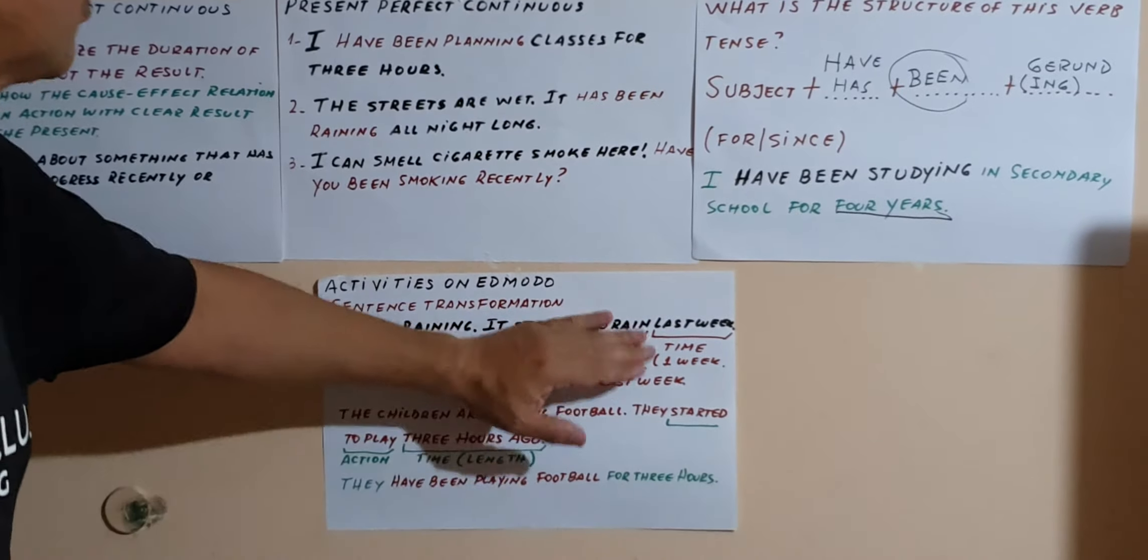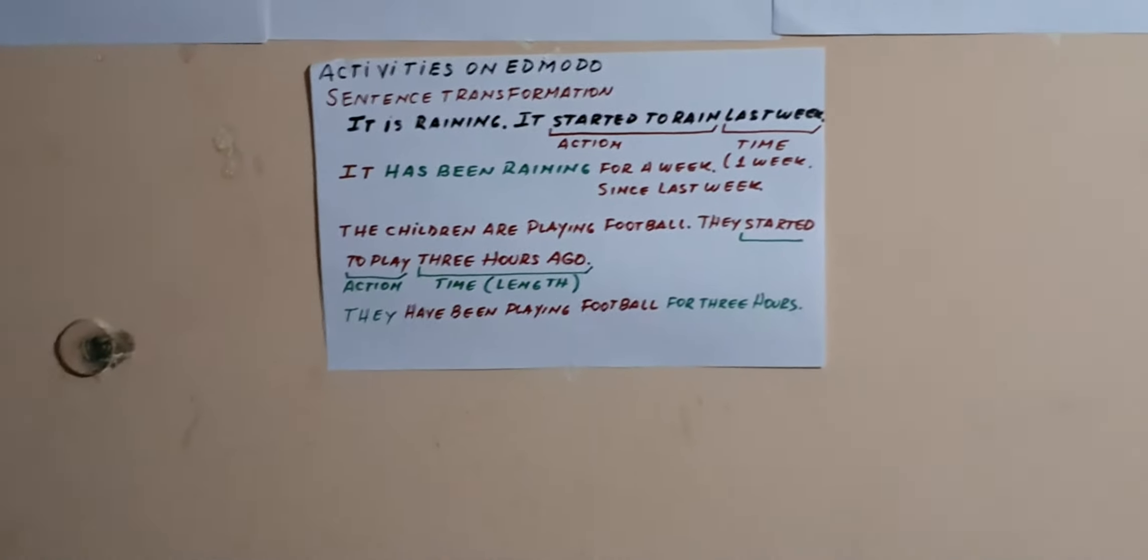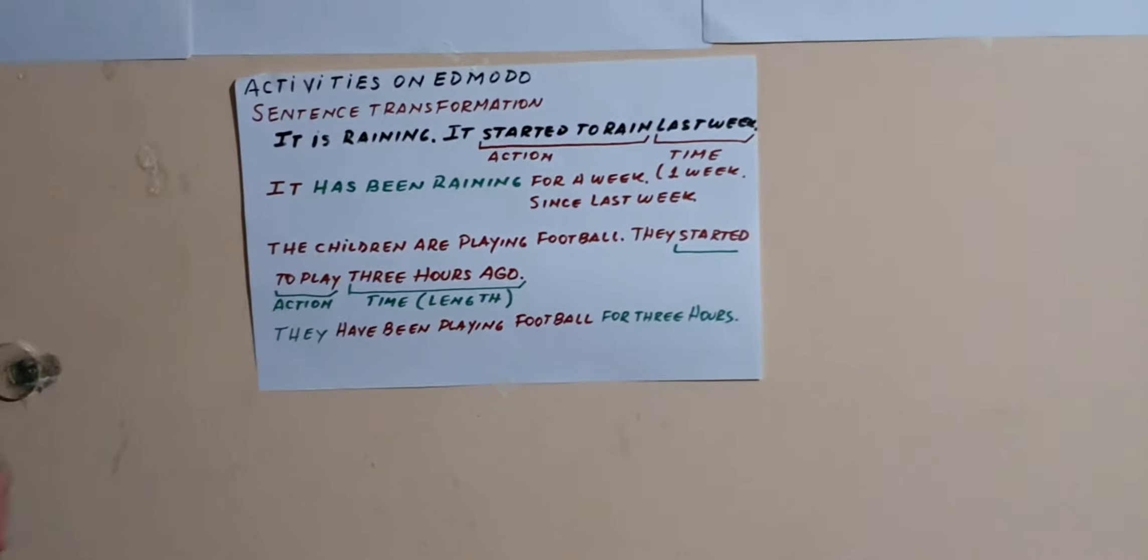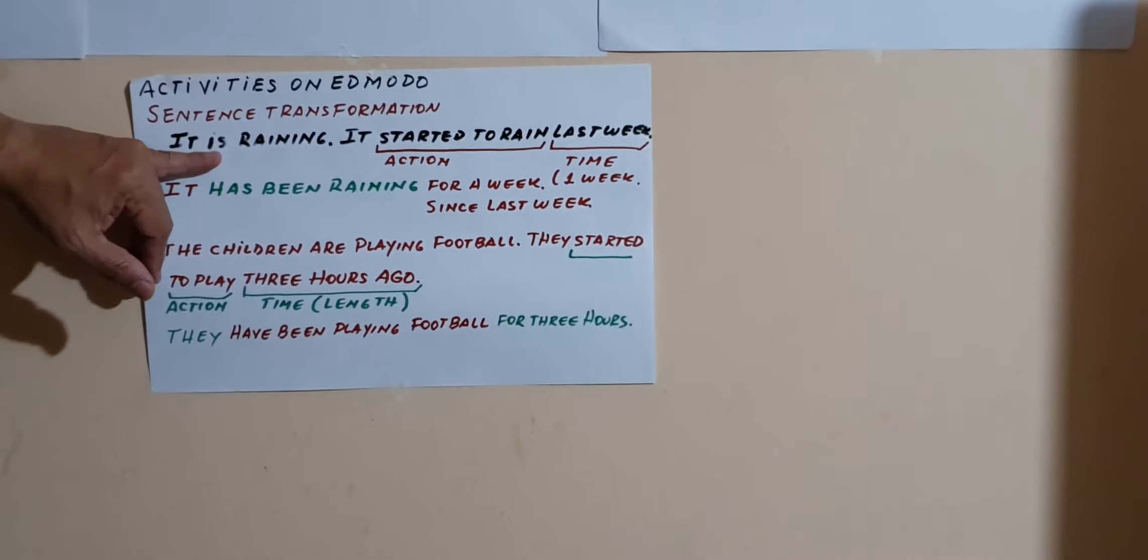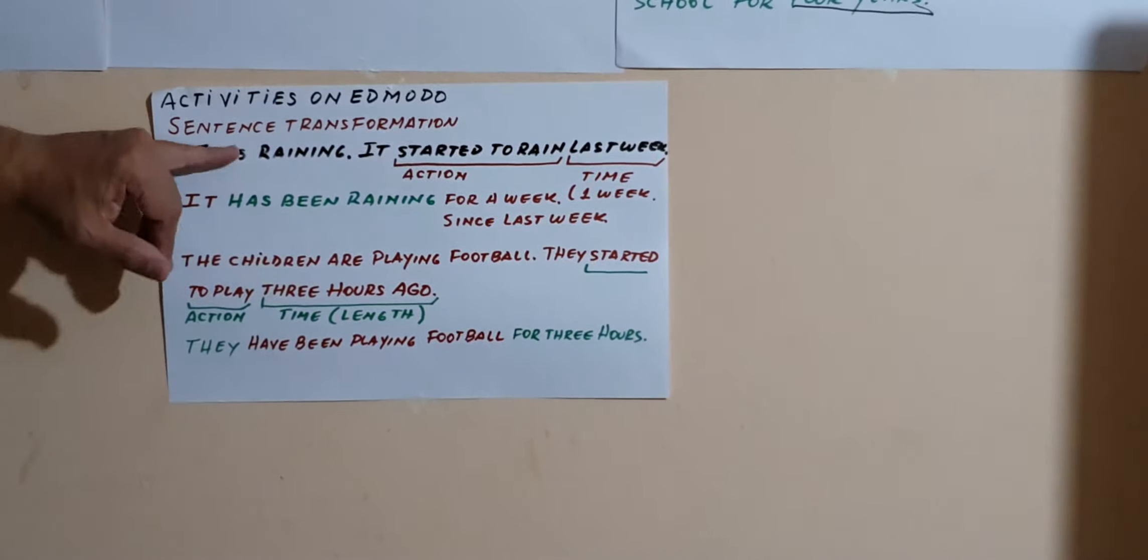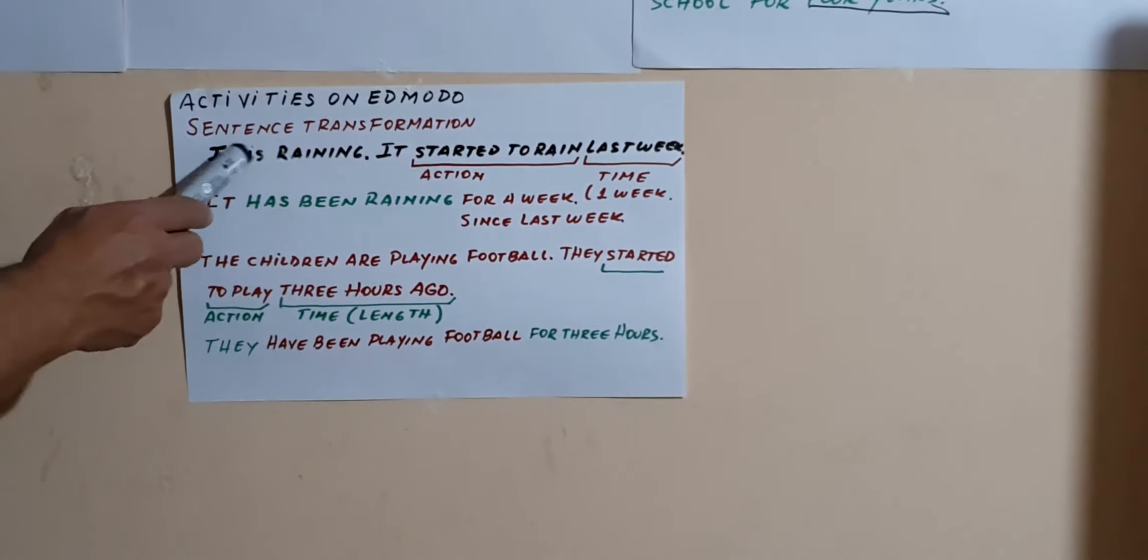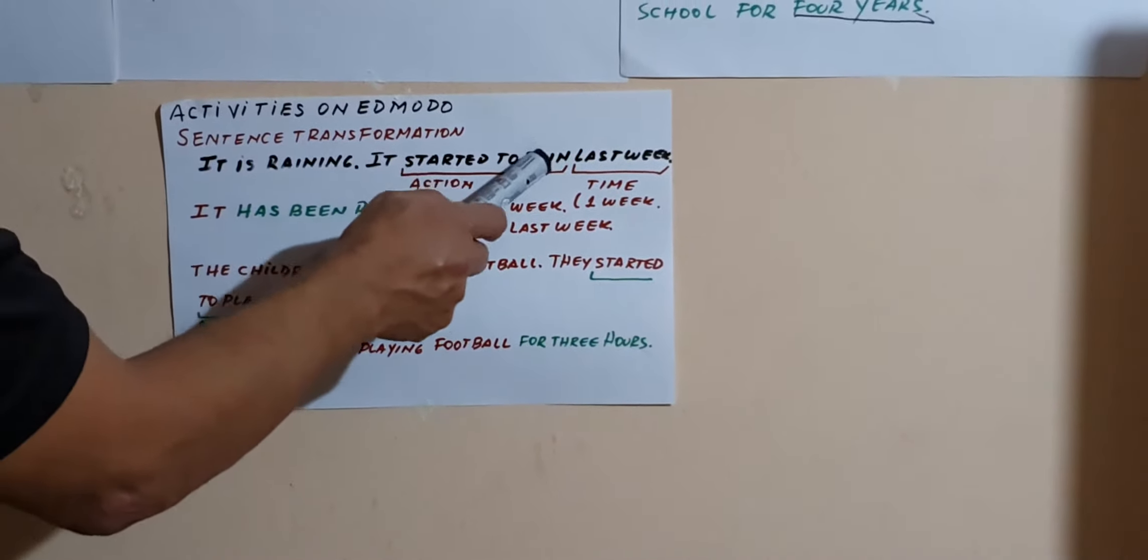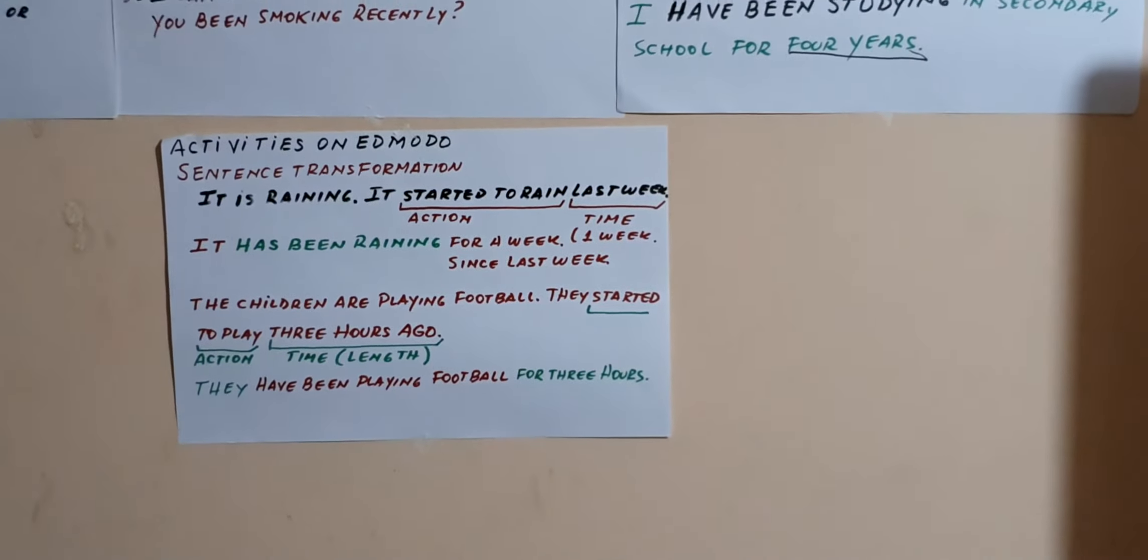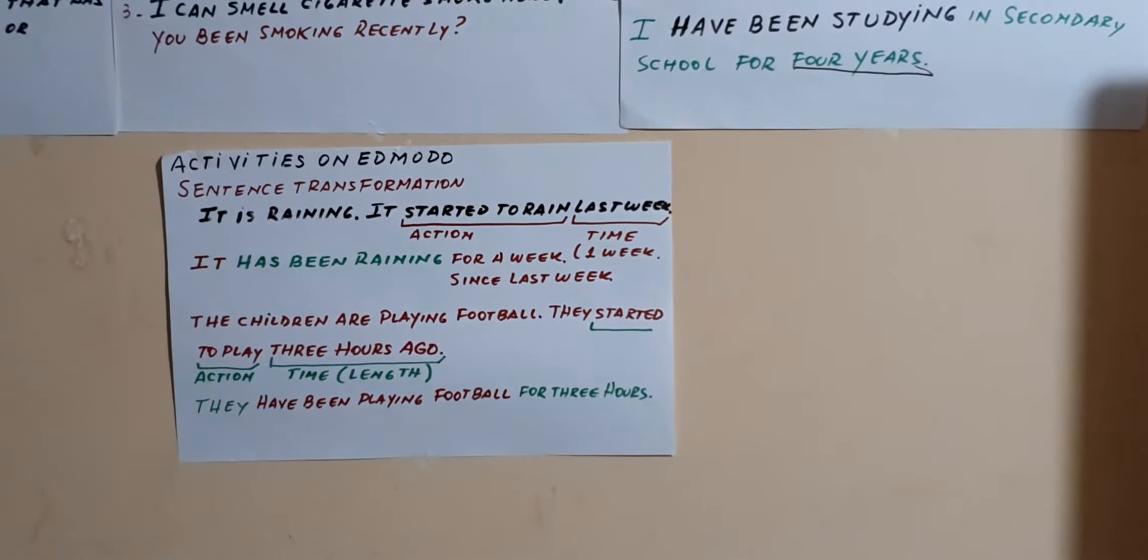Este es el presente perfecto continuo y sirve para esto. The activities: estas son las actividades que ustedes van a tener que hacer en el modo. The first one is sentence transformation. Es decir, vamos a trabajar con transformación de oraciones. Yo les voy a dar una oración y ustedes tienen que parafrasear, transformar esa oración con el presente perfecto continuo.